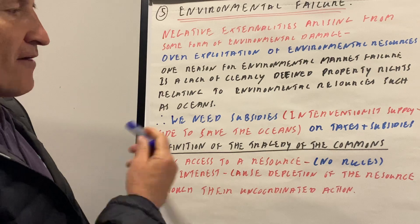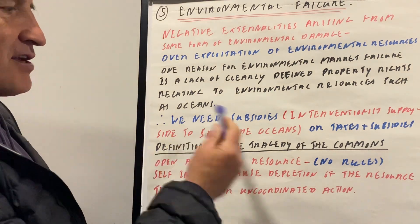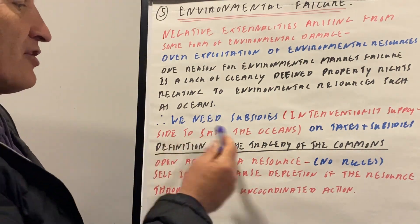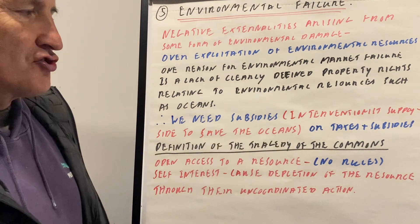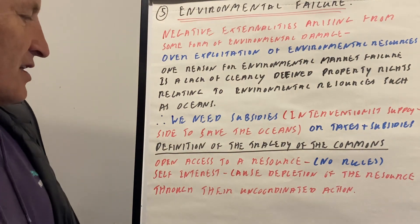To get over this problem we might need subsidies, interventionist supply-side economics to save the oceans, or we might need taxes and subsidies.